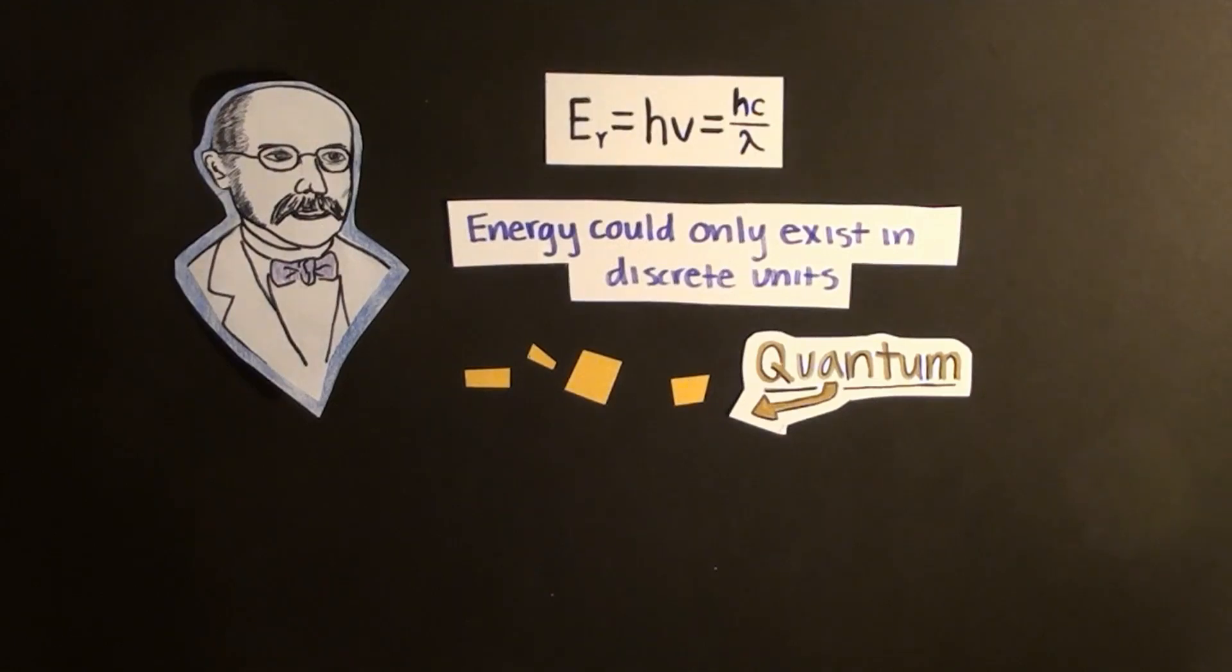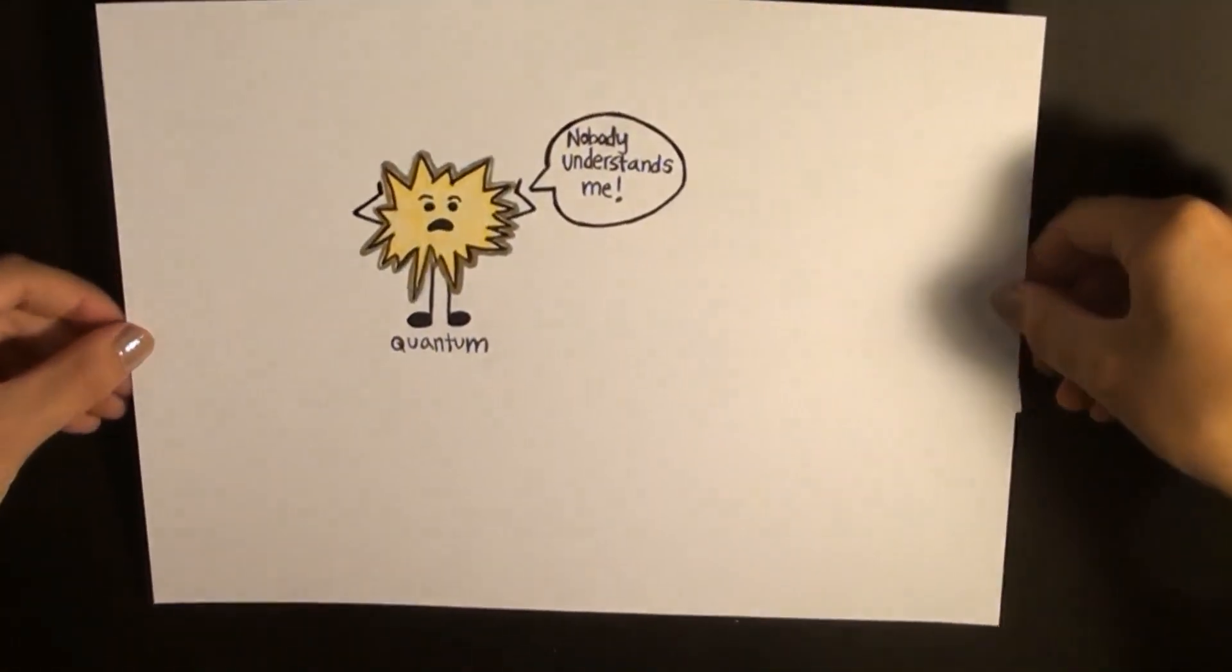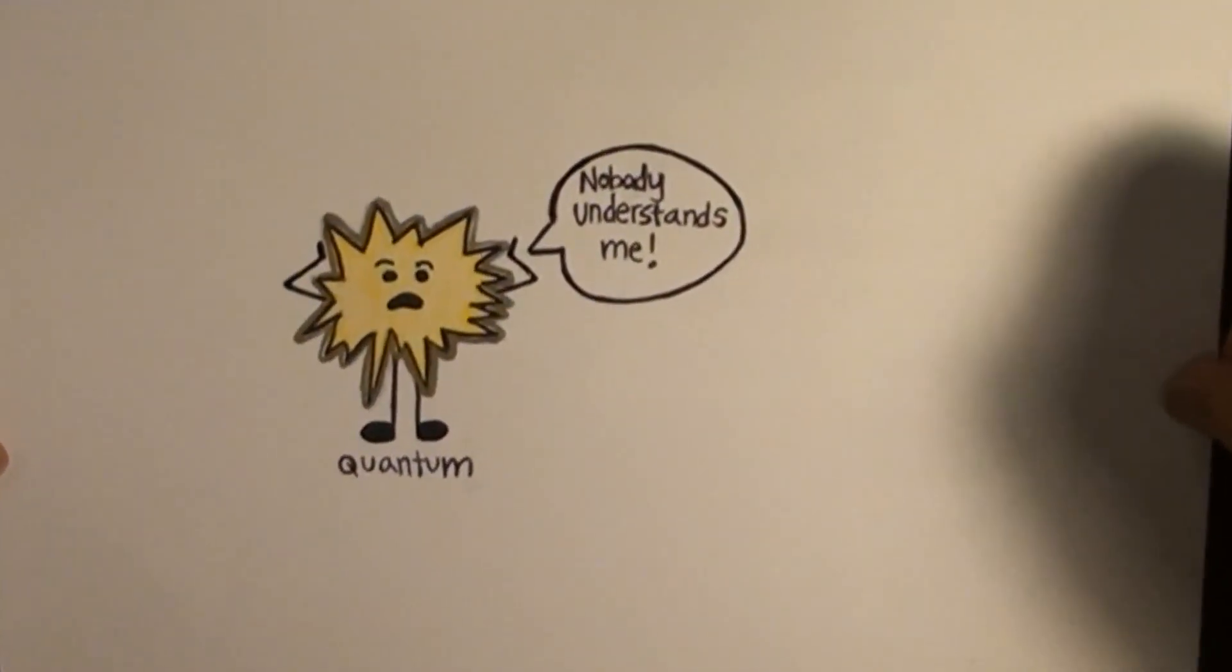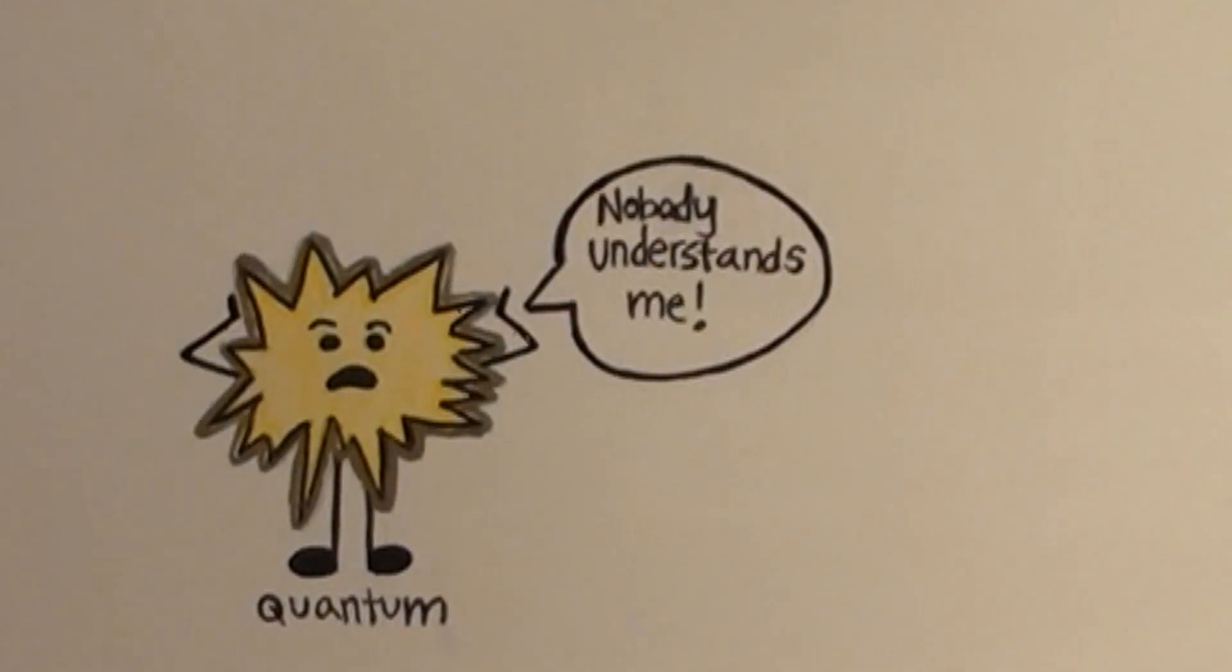Through this discovery, Planck unknowingly took the first step towards the creation of a realm of physics that causes even the greatest scientific minds to cower. In fact, Planck himself did not fully understand his discovery. Despite developments in this field such as the uncertainty principle developed by Heisenberg and quantum leap theory developed by Bohr, quantum physics did not really find a prominent place in the scientific world for quite some time.